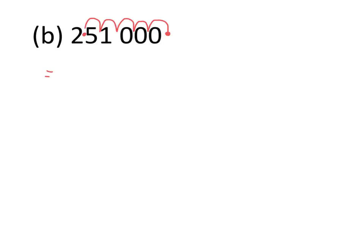For question 5b we again have a whole number, so the decimal point is at the end. We need to move it to the position between the 2 and the 5. Remember that the number at the front must be a single digit between 1 and 9. That involves jumping 5 places, so the answer is 2.51 times 10 to the power of 5.